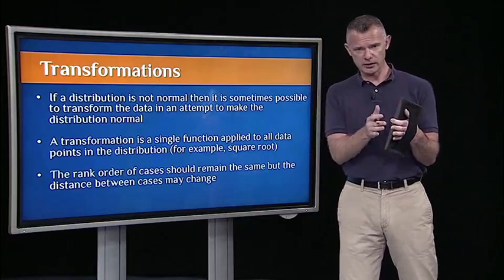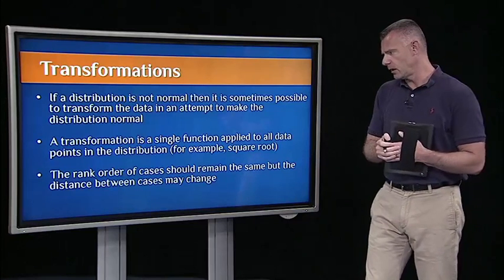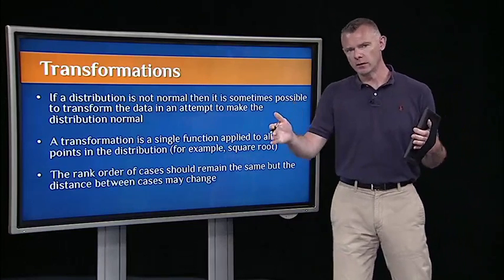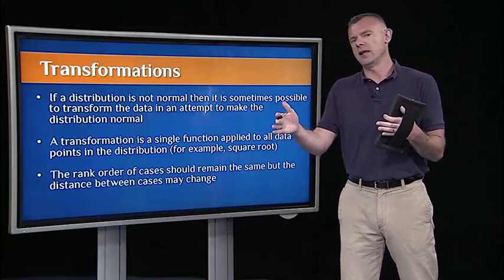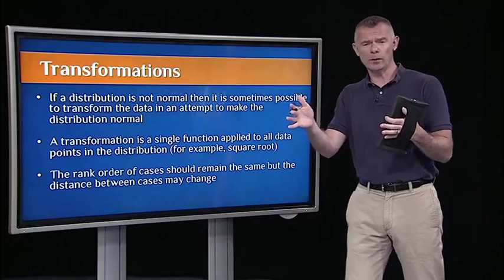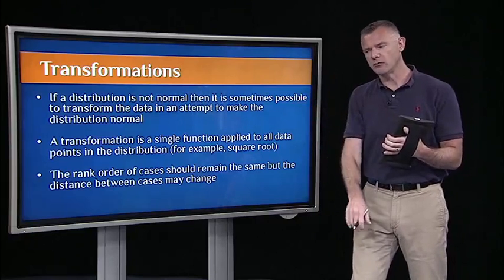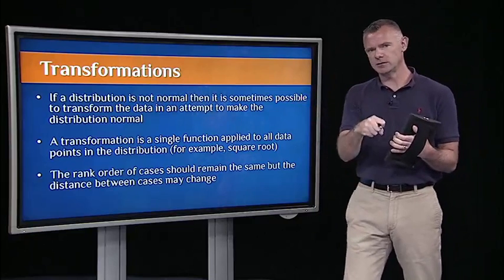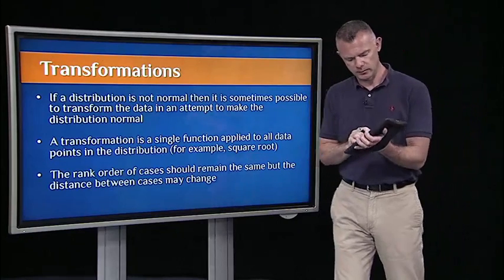What's important about these transformations is they do change the values in our variables, but the rank order of the cases won't change. The distance between the cases may change, reducing the variance and standard deviation, hopefully reducing the skew. But what's really important is that the rank order of cases doesn't change. That's what's key to doing a data transformation.